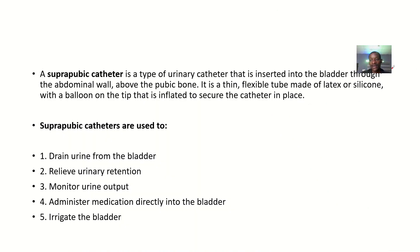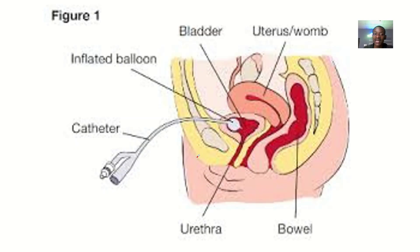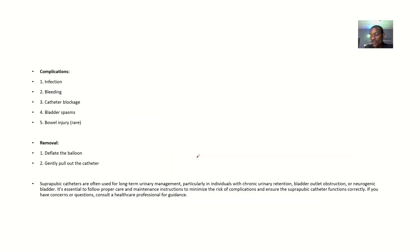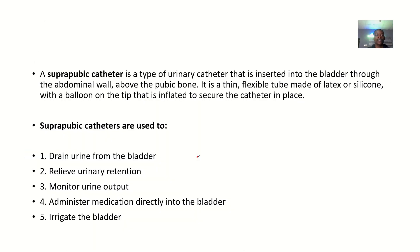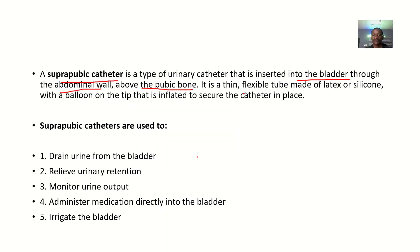This is the third example of catheter we'll be looking at. We'll cover the definition, uses, insertion methods, advantages, complications, and removal method. The suprapubic catheter is a type of urinary catheter inserted into the bladder through the abdominal wall, above the pubic bone — directly into the bladder.